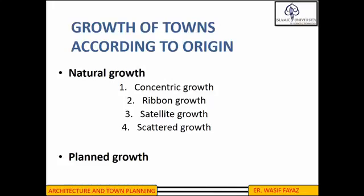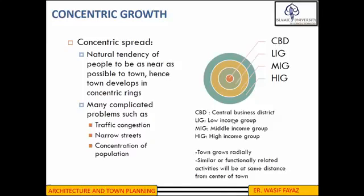The natural growth of a town may be in the form of a concentric spread, ribbon growth, satellite growth, or scattered growth, and we will discuss all of them in detail. Concentric growth: it is a natural tendency of people to be as near as possible to a town or city. As a result, the town develops in the form of concentric rings, and such growth creates many problems such as traffic congestion, concentration of population, narrow streets, and improper housing. The town growth in concentric spread is represented by a series of concentric circles or rings.